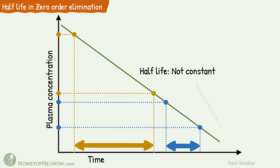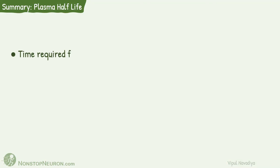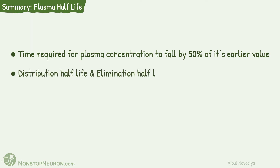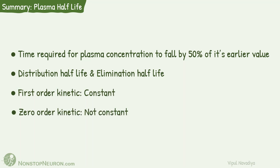This covers all the points for this video. Quick summary: half-life is the time required for plasma concentration to fall by 50% of its earlier value. Two different half-lives — distribution half-life and elimination half-life — are seen after giving a drug. In first-order kinetics, half-life is constant. And in zero-order kinetics, half-life is not constant.